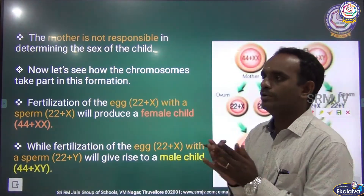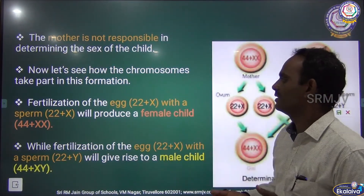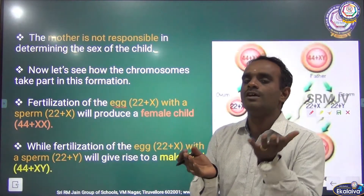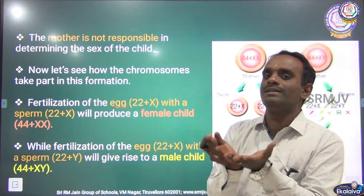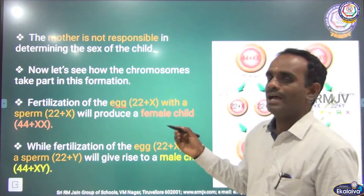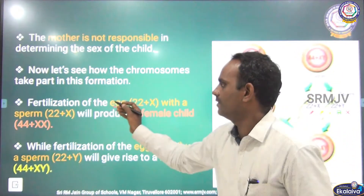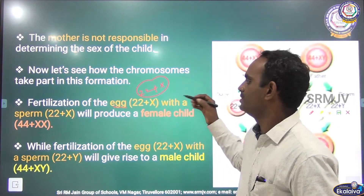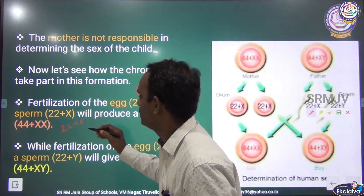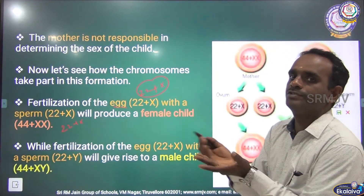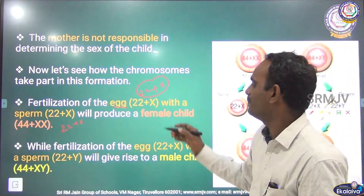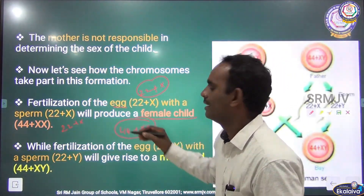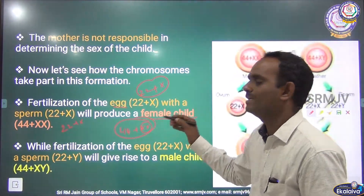Now let us see how the chromosomes take part in this formation. During sexual reproduction, fertilization means fusion of gametes — male gametes and female gametes. The egg is the female gamete and sperm is the male gamete. Fertilization of the egg having 22 plus X chromosome fused with sperm 22 plus X — this X and X fused, the process is called fertilization. What will happen? A female child having 44 plus XX chromosomes will be formed.